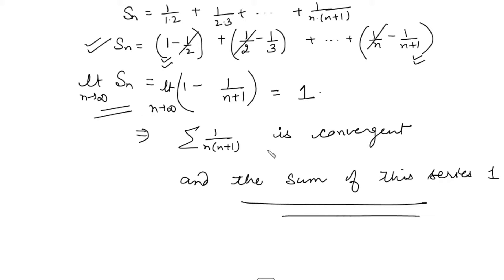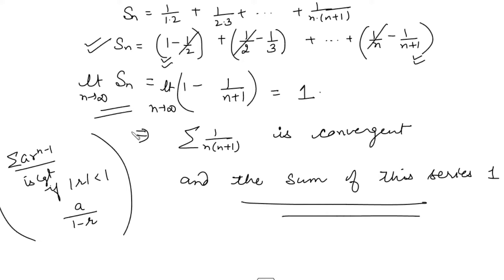So if we have a question asking to find the sum of a series, we can use either the GP series test — which converges to a/(1−r) when |r| < 1 — or the telescoping series method, by finding the nth partial sum, observing the cancellation, and taking the limit. If the limit is finite, the series is convergent and that limit is the sum.